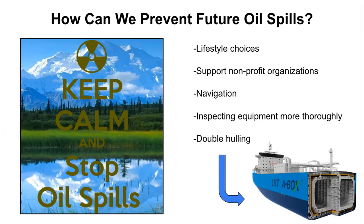How can we prevent future oil spills? To help prevent future oil spills, make smarter lifestyle choices — whether it's decreasing fossil fuel usage, choosing fuel-efficient alternatives, or using green energy, everyone can make a change. The nautical industry is implementing actions to reduce oil spills. The Coast Guard is constantly updating its navigation technology to reduce boat collisions. Having a thorough inspection of equipment before putting it in the water can prevent leaks. Ship technology known as double hulling is a technique where two layers of watertight hull surface are used rather than one, making it less likely for a ship to leak oil.